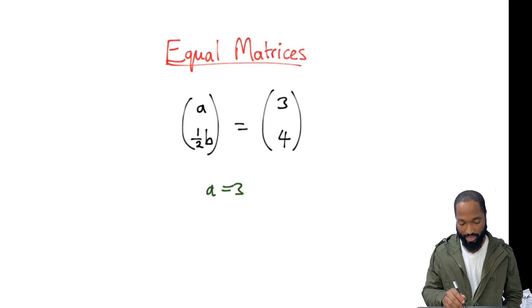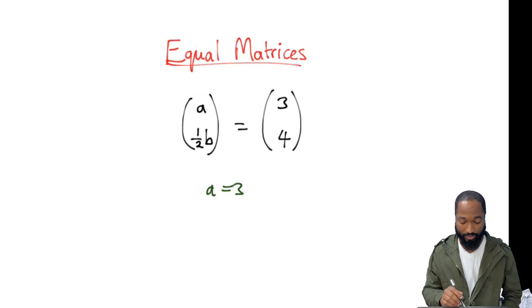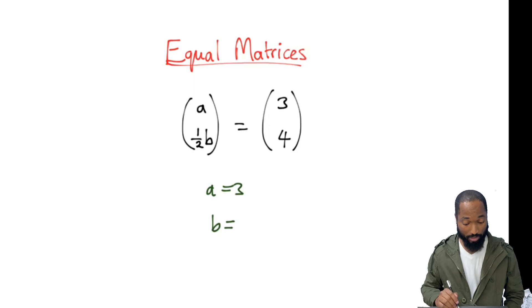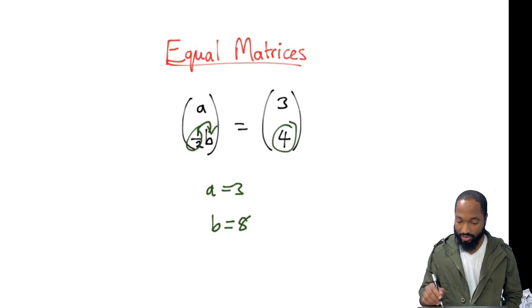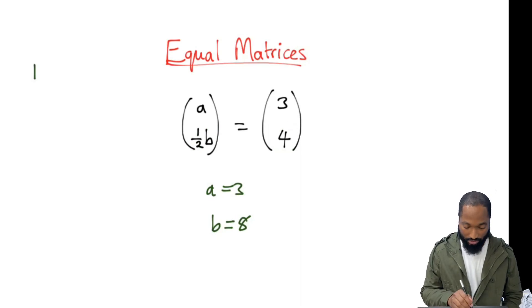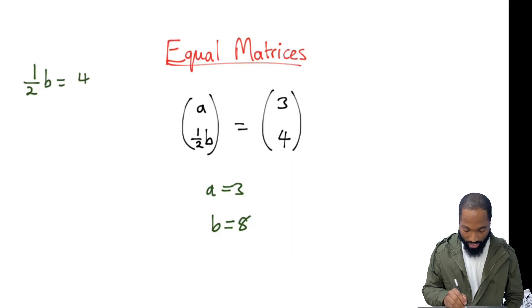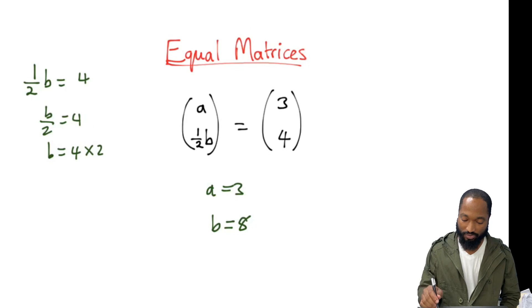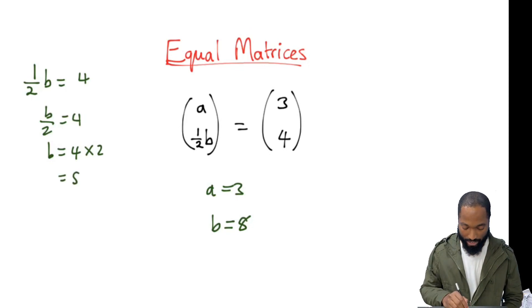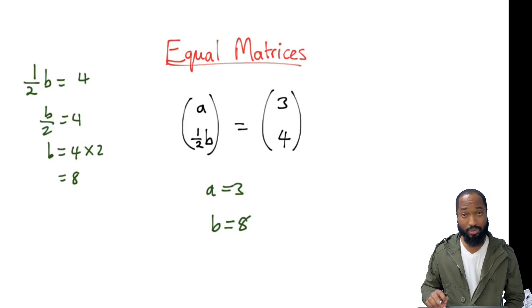A is obviously 3, right? A has to be the same as that. And B — pause the video, make sure you write your answer for B. How many people said 2? How many people said 8? 8 is the correct answer. Half of B is 4, so you could write half B is equal to 4, that's B over 2 equal to 4. We bring across the division so it turns to multiply, so B is equal to 8. This is solving it using algebra — equal matrices, some fun stuff.